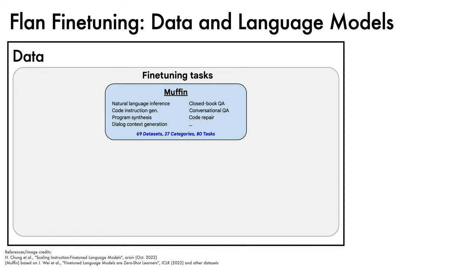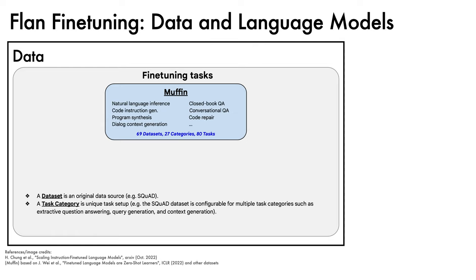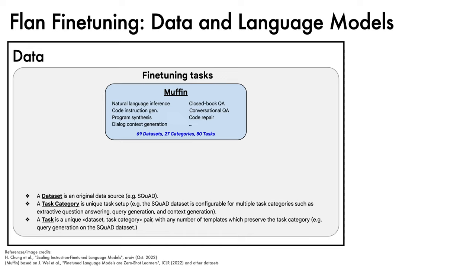Since these terms are open to interpretation, let's clarify how they are being used here. A dataset is an original data source, such as SQuAD. A task category is a unique task setup — for example, the SQuAD dataset can be configured for multiple task categories like extractive question answering, query generation, and context generation. Finally, a task is a unique dataset-task-category pair with any number of templates that preserve the task category. An example of a task under this definition is query generation on the SQuAD dataset.